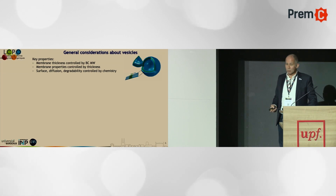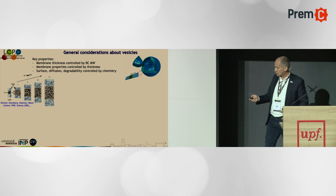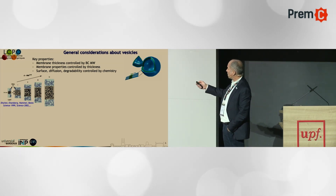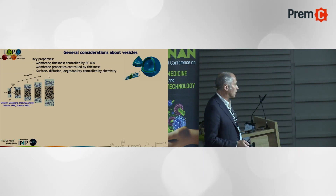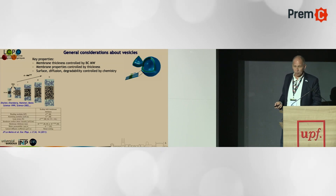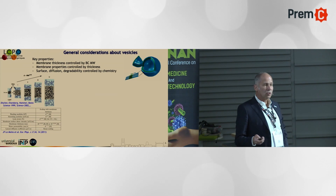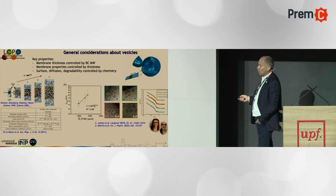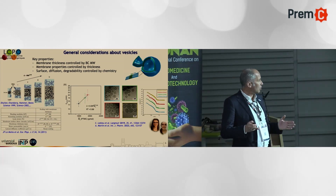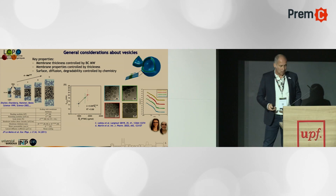Membrane thickness is a key parameter in polymersomes and vesicles in general. We can control it quite easily in polymer science — you can control the thickness by controlling the molecular weight of your polymer. By increasing the molar mass, the thickness of the membrane scales as the square root of the molecular weight, which is really predictable and general for every polymer. Here is a series of diblock copolymers where the same hydrophilic-hydrophobic balance is maintained and total molecular weight is increased, confirming this scaling law.